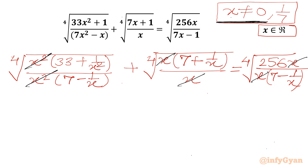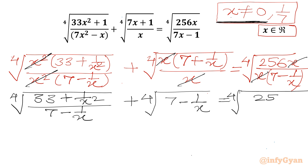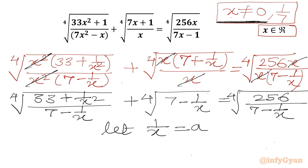Now I will write here: 4th root of (33 plus 1 over x squared) over (7 minus 1 over x), plus 4th root of (7 minus 1 over x), equal to 4th root of 256 over (7 minus 1 over x). Now let us call 1 over x equal to a. When x is not equal to 1 over 7, so a cannot be 7.